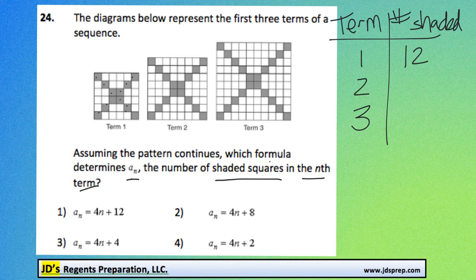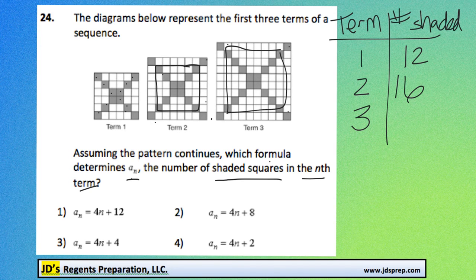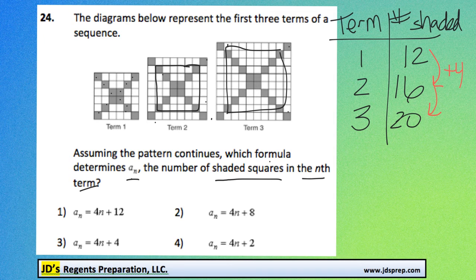The second one looks like it's the same pattern we can see here, plus 4 more, so that would be 16. And then again it increases by 4 more, so 20. We can see the number of shaded squares is increasing by 4 each time, and that's why we're looking for a coefficient of 4, which is actually in all four of these possible answers.